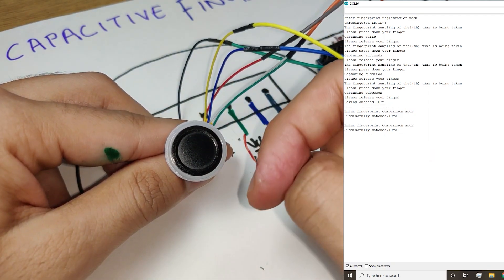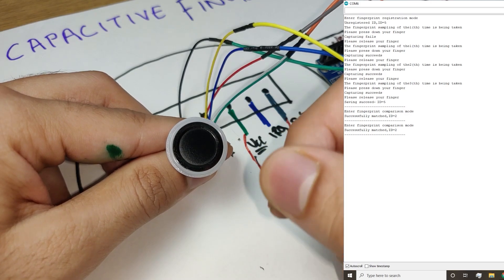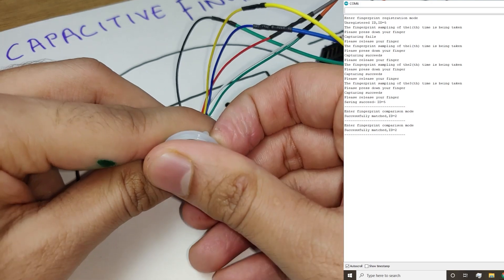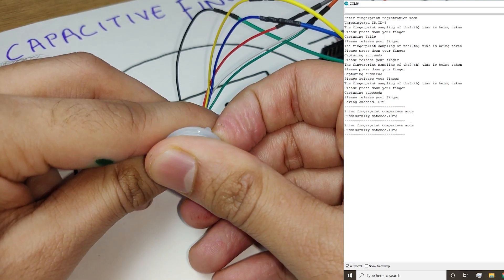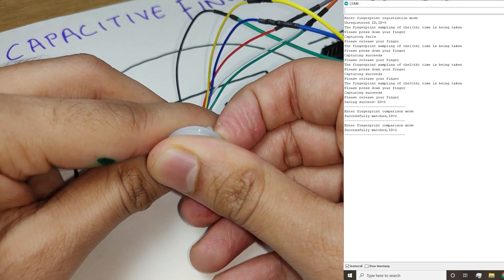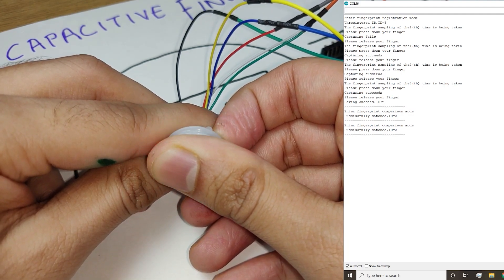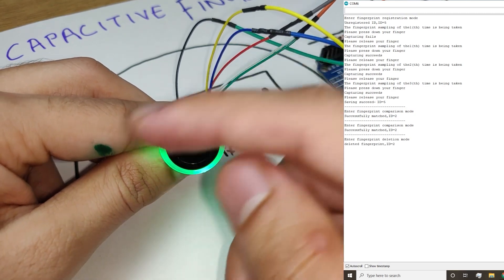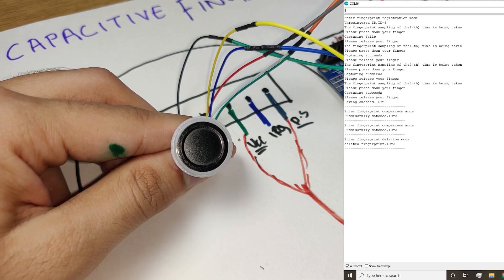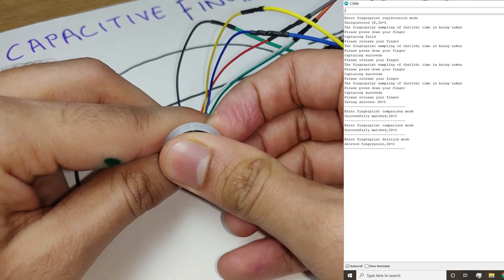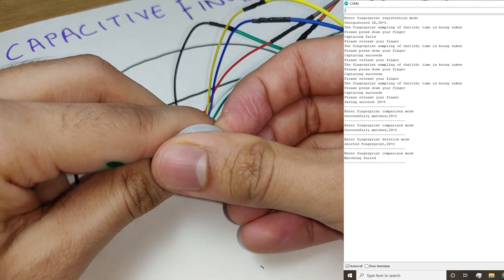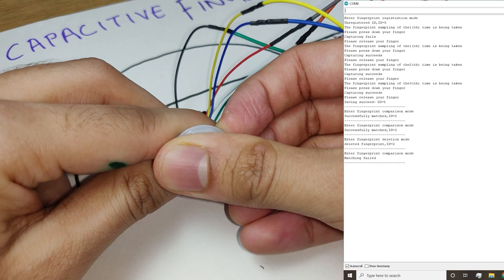Now we can also delete this fingerprint. So for deleting we need to hold it. This is the first option which was about checking, this is the second option for reading, and this is the third option for deleting. It shows green and on the serial monitor we can see it says that ID2 has been deleted. Now let's try it again. It says red and it's not detected. If I try it on a different angle it might detect...